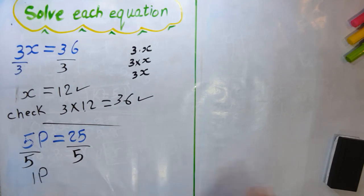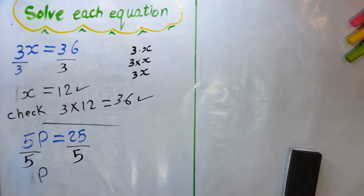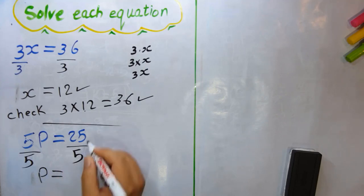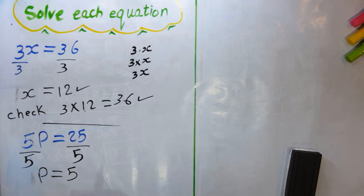We can remove the 1 because 1b is the same as b — like saying 'I have one book' or just 'I have a book.' So b = 25 ÷ 5 = 5. The solution is b = 5.